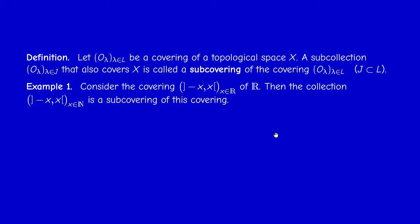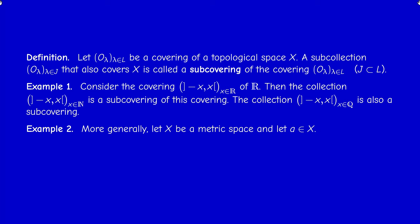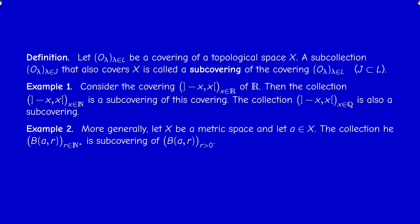Similarly, restricting the index to rational numbers still gives a sub-covering. More generally, in a metric space with a fixed center a, the collection of all balls of positive radius centered at a is a covering of the space, and the collection of balls centered at a with radius in the positive integers is a sub-covering — it is a sub-collection and the union is still X.